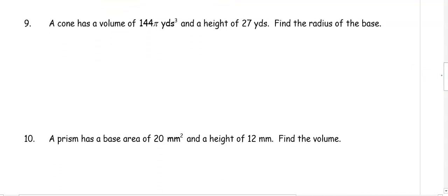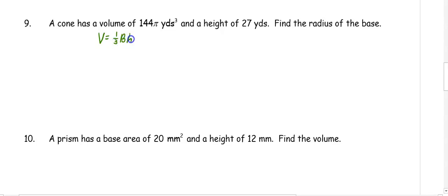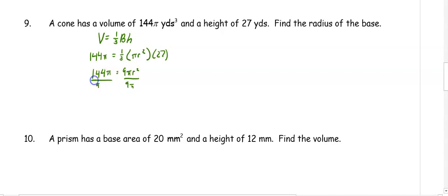In number nine, a cone has a volume of 144 pi yards cubed and a height of 27 yards. Find the radius of the base. The volume of a cone is one third the base area times the height. We know the volume is 144 pi, the base area is pi r squared, and the height is 27. One third of 27 is 9, so 144 equals 9 pi r squared. We divide by 9 pi on both sides, and we get 16 equals r squared. Taking the square root, the radius is 4 yards.